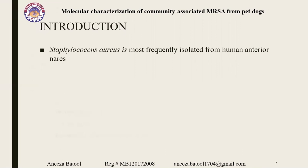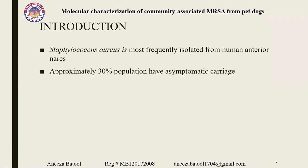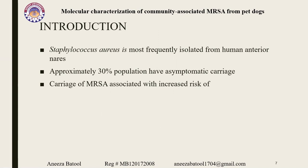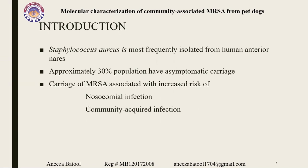Staphylococcus is mostly isolated from the human anterior nares because it is the normal flora of humans. Approximately 30% of the population have asymptomatic carriage, meaning they are positive for MRSA but do not show symptoms. Carriage of MRSA is associated with increased risk of nosocomial and community-acquired infections.